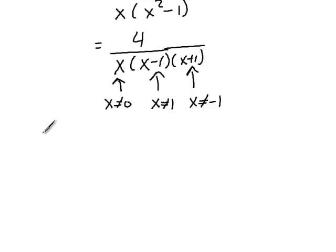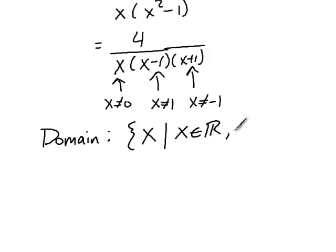So our domain is going to be all real numbers except 0, 1, and negative 1. So you could write that out in a sentence, or you could say that the domain is X, all values of X such that X is a real number, but X cannot equal 0 or plus or minus 1. Very good.